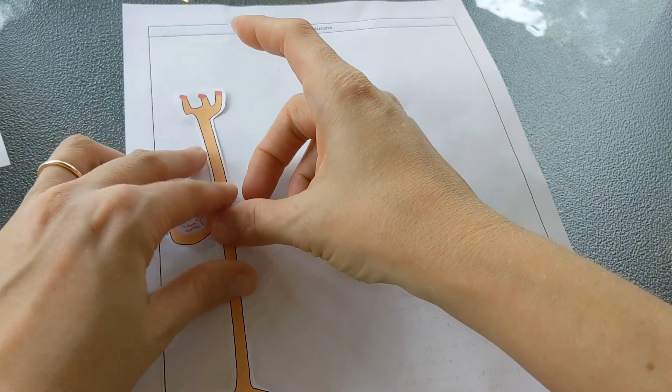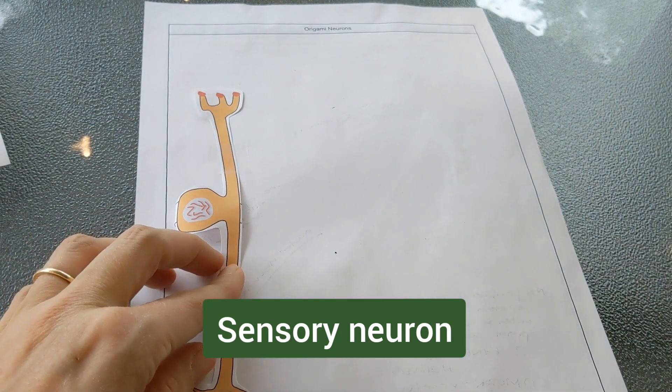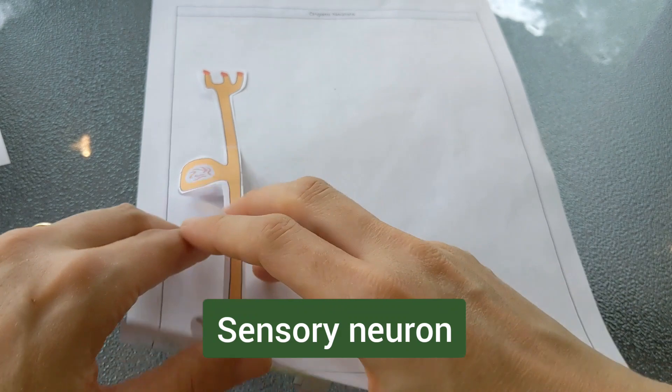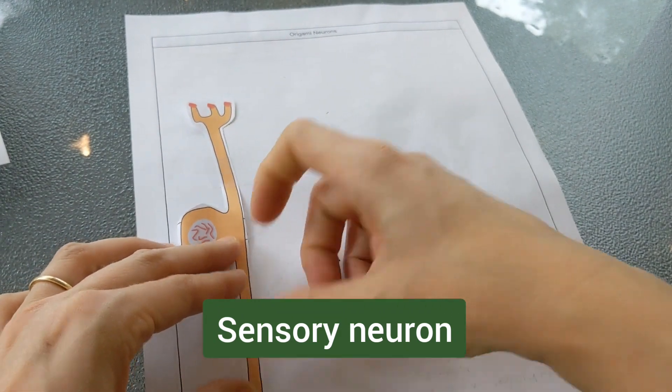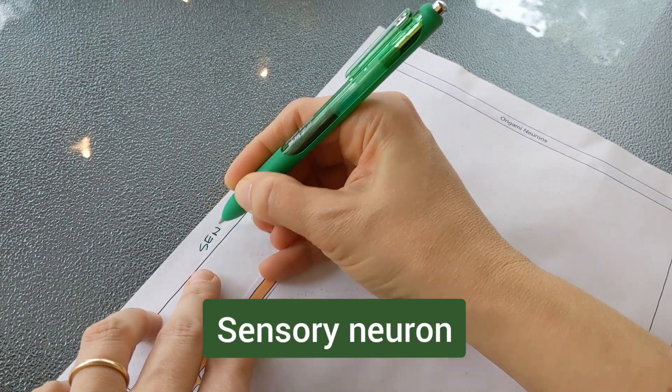I'm going to start by talking about the sensory neurons. You can go ahead and tape down your sensory neuron. I would tape it in the same position because I'm going to show how each of these neurons connects to the next one. So let's go ahead and label this guy sensory neuron.